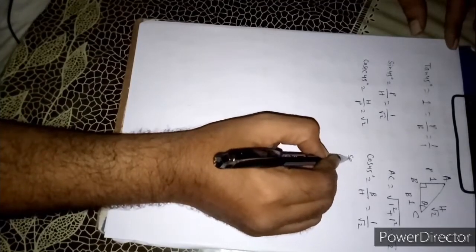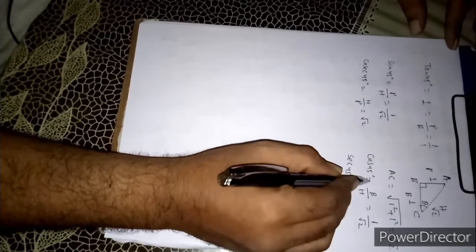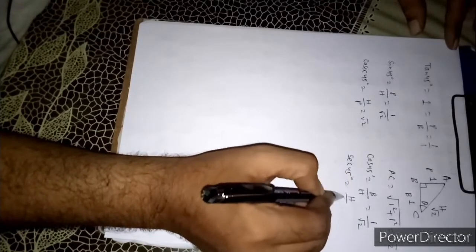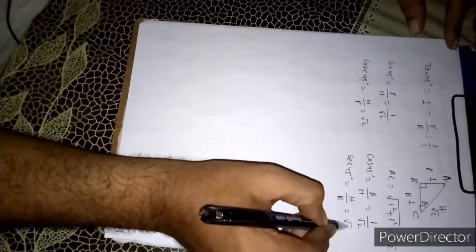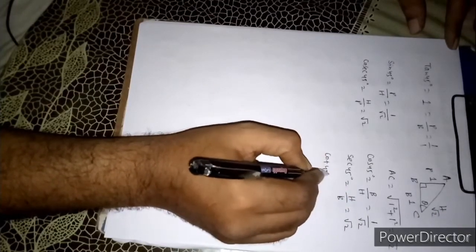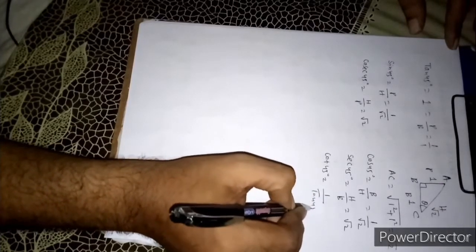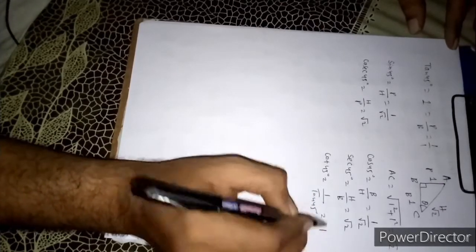Similarly sec theta, sec 45, sec is the reciprocal of cos 45, so it will be H by B, that means root over 2. What theta we can find easily? Cot 45, cot is the reciprocal of tan you know, it means 1.